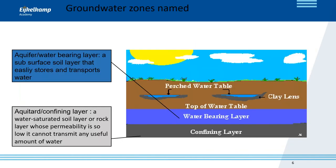Groundwater is that part of subsurface water that fully saturates the pore spaces of a soil or rock mass — this zone is called the saturated zone. Above it is the unsaturated zone, in which water does not fully saturate the pores and is kept there by capillary forces. The upper surface of the saturated zone is called the groundwater table.